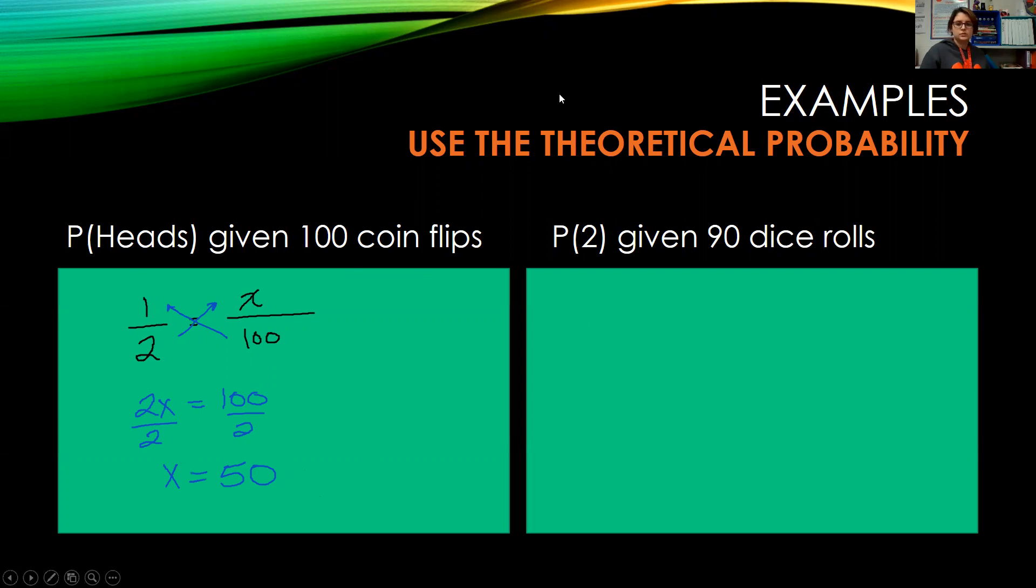Our next one, the probability of a 2 given 90 dice rolls. So we know the theoretical probability of a 2 is 1 out of 6. The 2 is 1 out of 6 possible sides. We want to predict how many times we would get the 2 given 90 rolls of the dice.